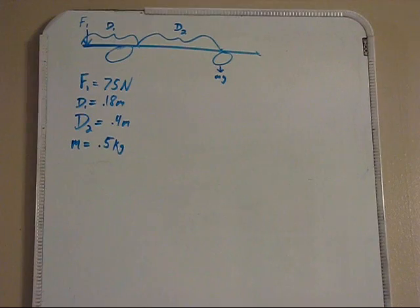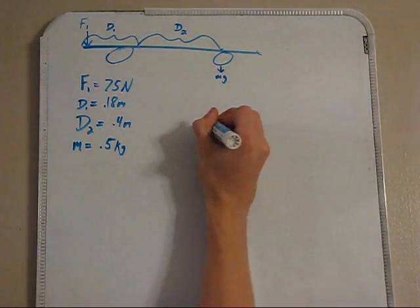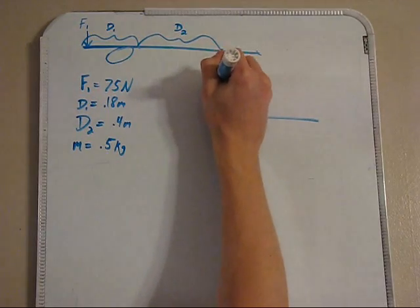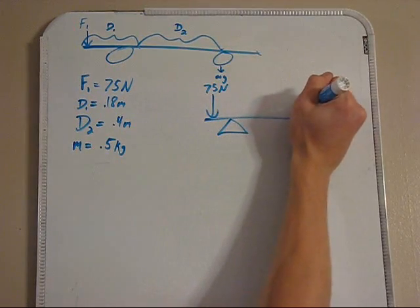You can start out by drawing just this lever, which explains that there are 75 newtons pushed down on one side, and there are 5 newtons pushed down on the other side.